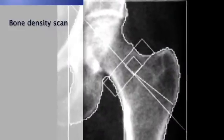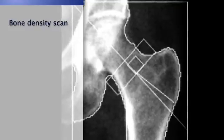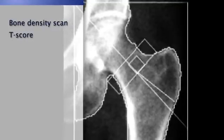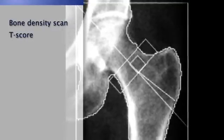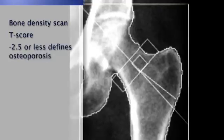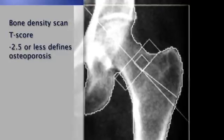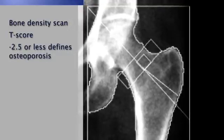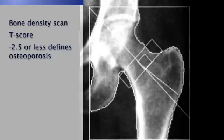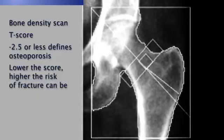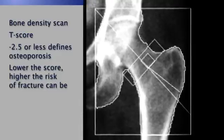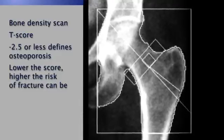The diagnosis of osteoporosis can in part be based on a bone density scan, and the result is shown as a T-score. A T-score of less than or equal to negative 2.5 defines osteoporosis, and the lower the score, the higher the risk of fracture can be.